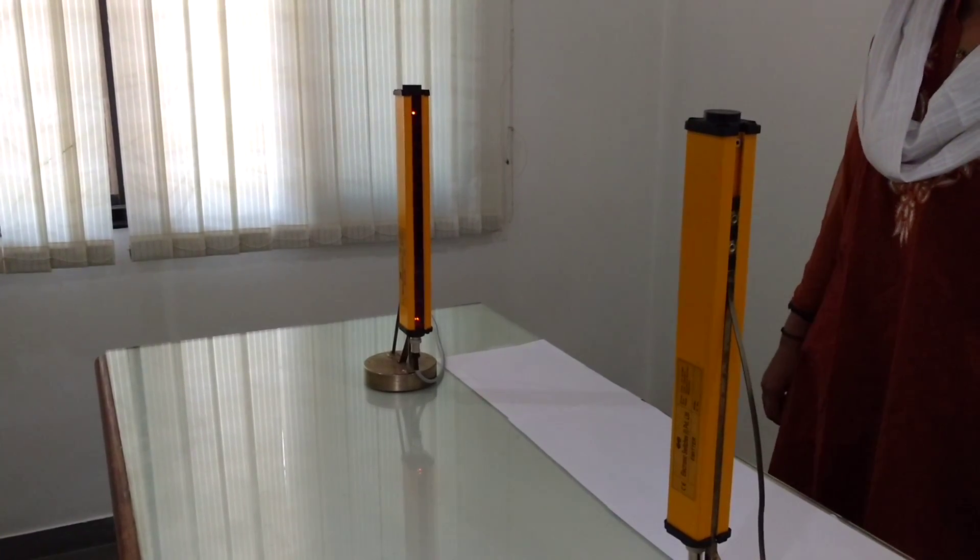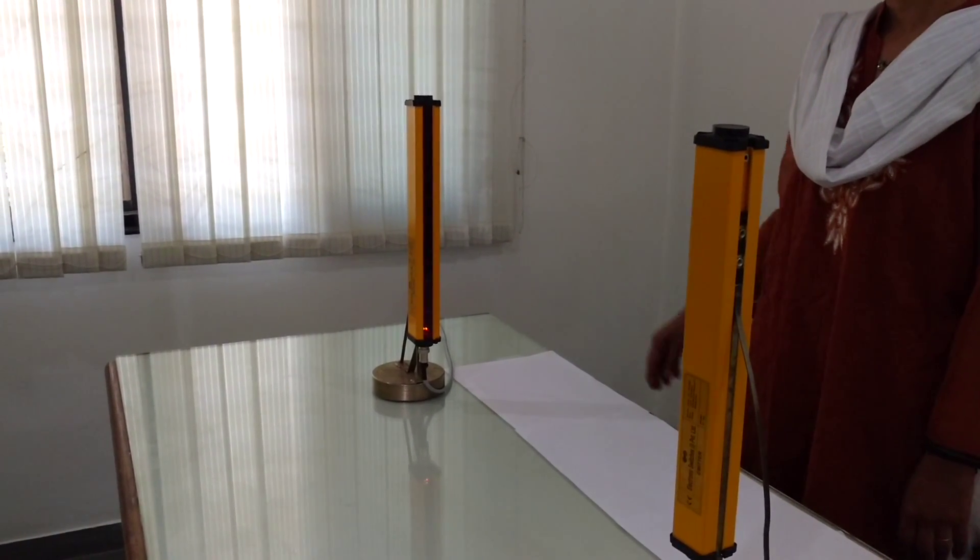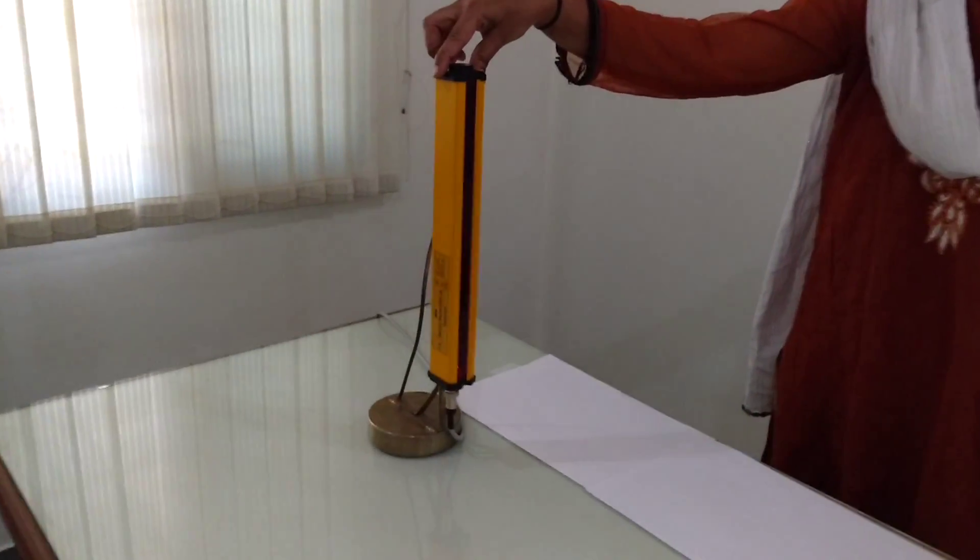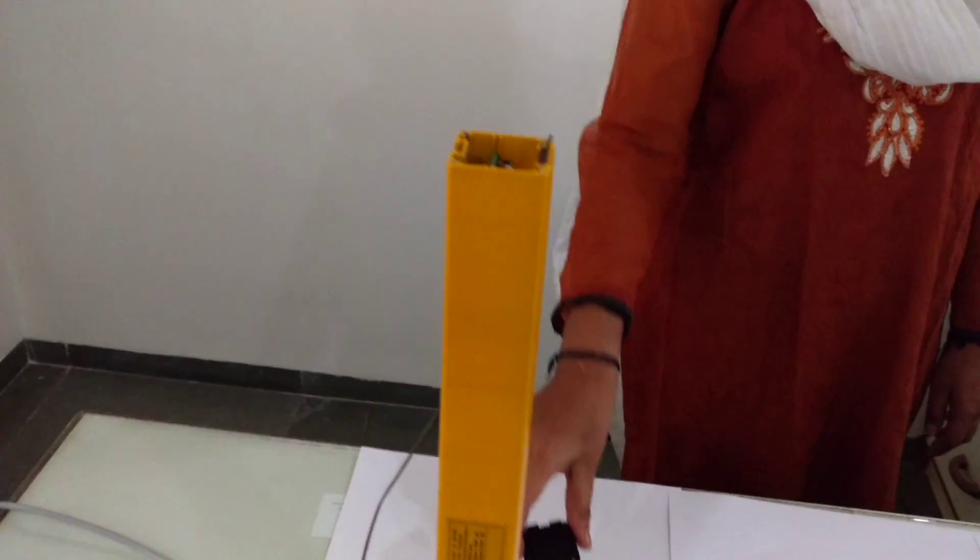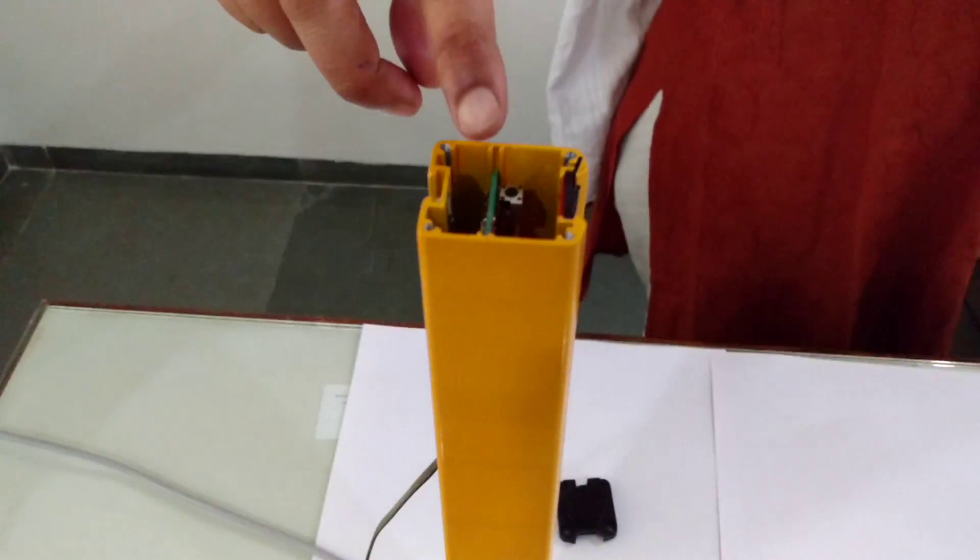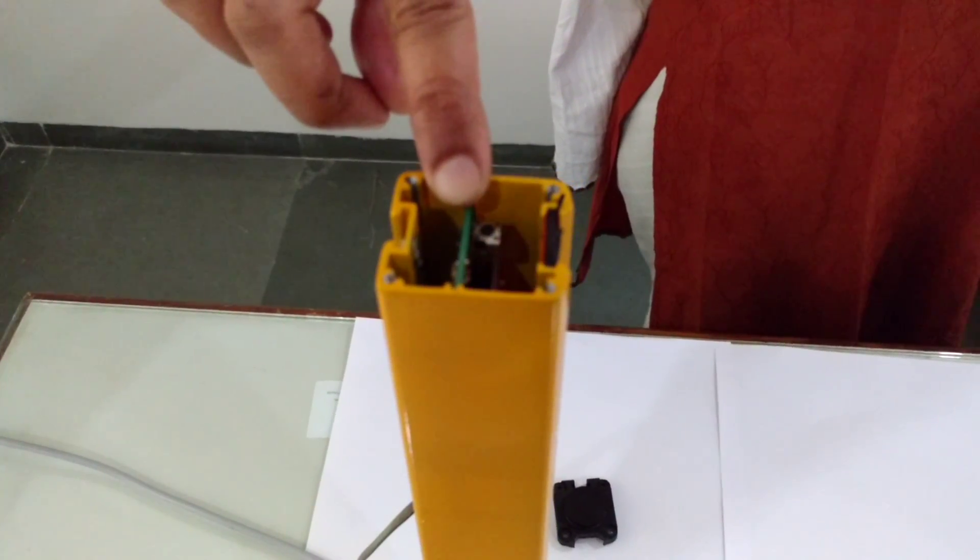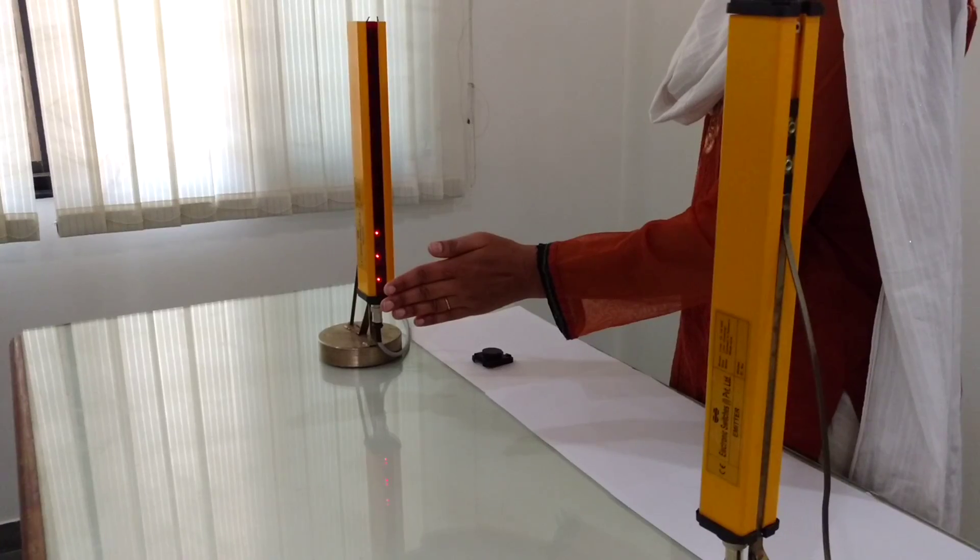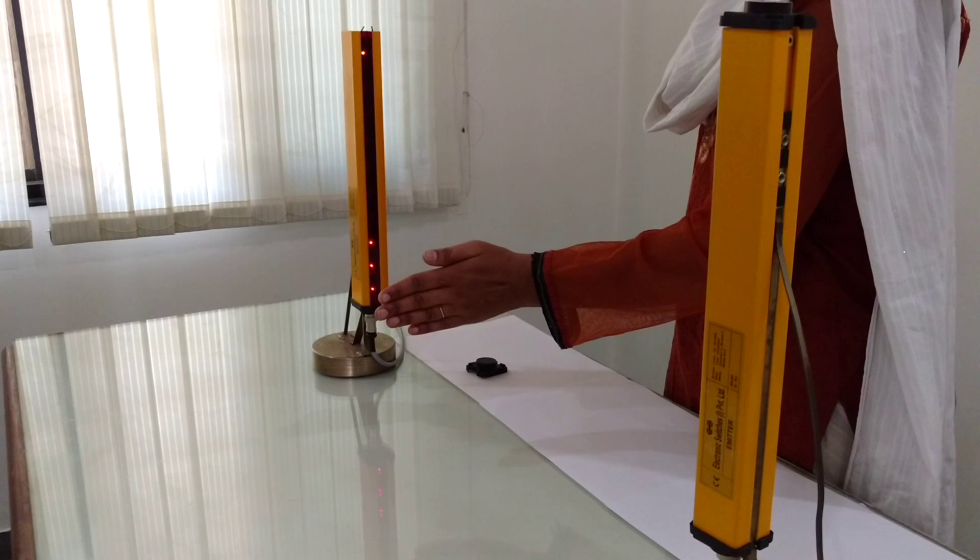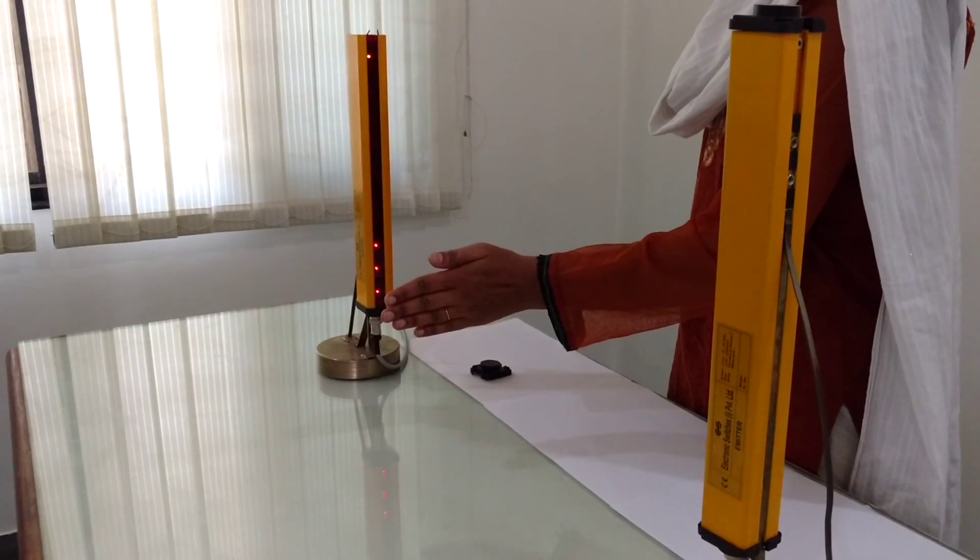Now to bypass the light curtain, remove the top cover of the receiver and locate the bypass switch on the top side. Then block the required beams to be bypassed as shown.